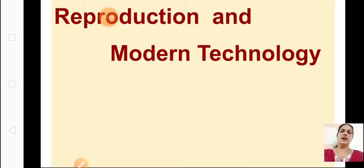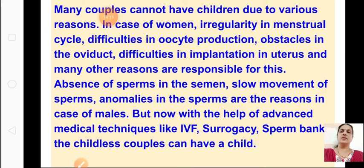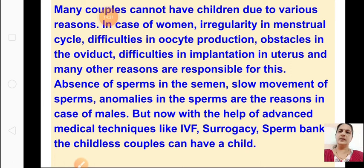Now let us do a quick revision of modern technology. Many couples cannot have children due to various reasons. In women, it may be due to irregularity in the menstrual cycle, difficulties in oocyte production, obstacles in the oviduct, difficulties in implantation in the uterus, and many other reasons. In males, it may be due to absence of sperms, slow movement of sperms, or abnormalities in the sperm.